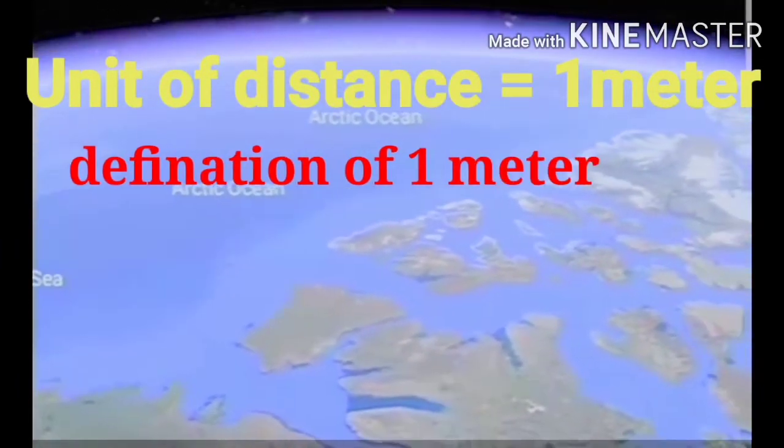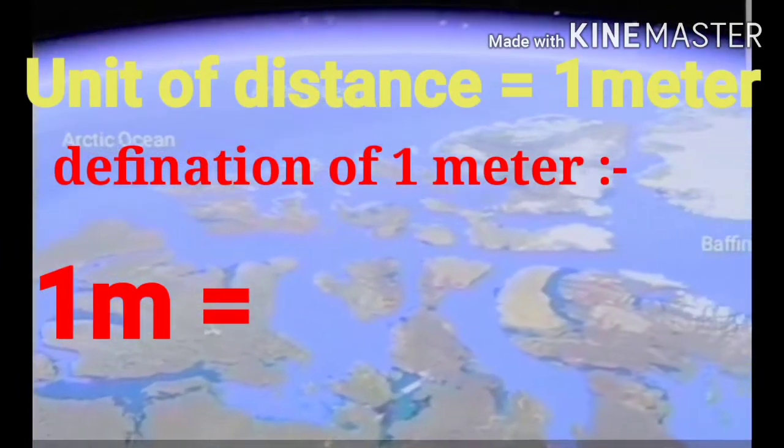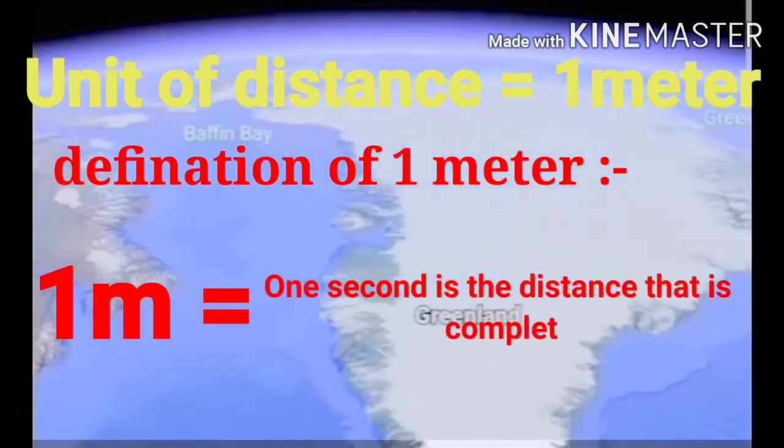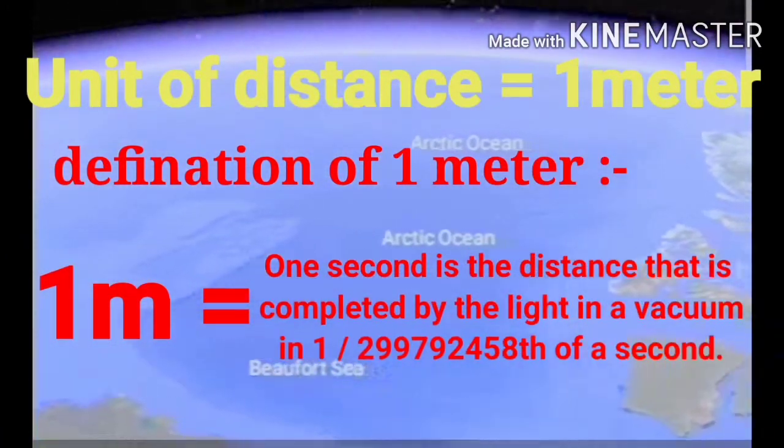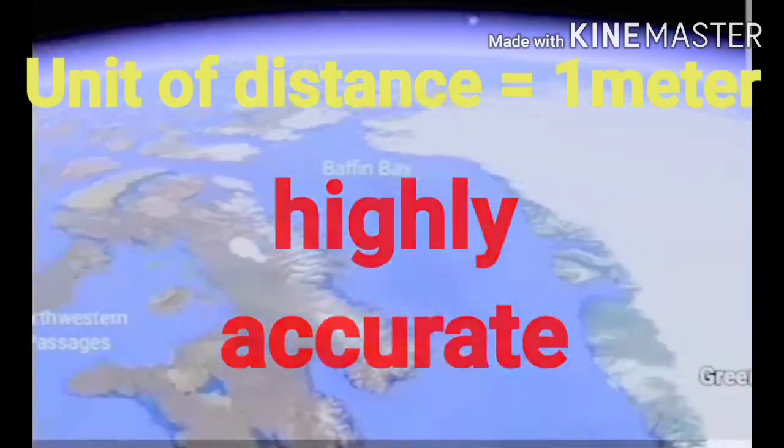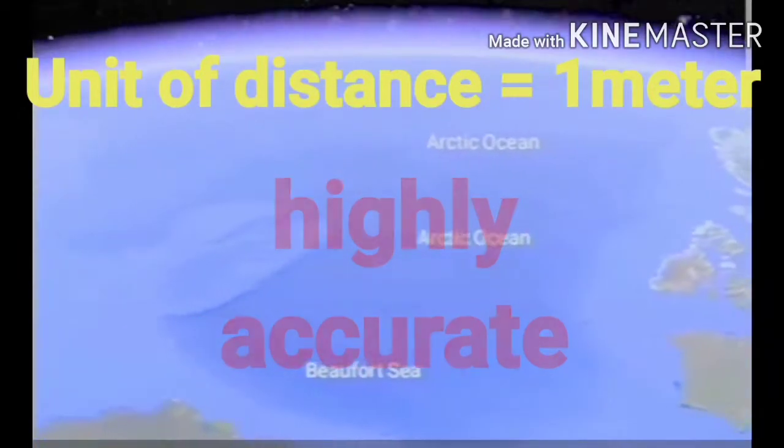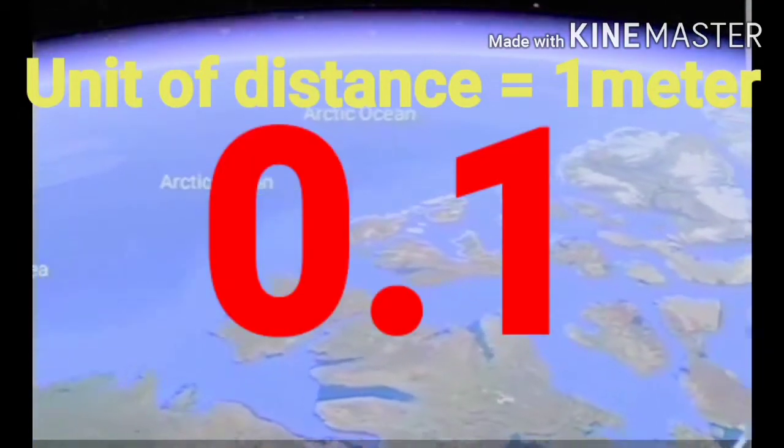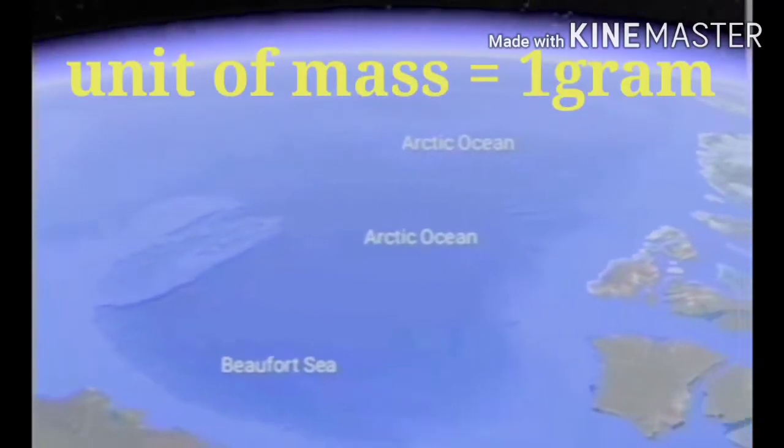That is, the distance that light completes in vacuum in 1/299,792,458 part of 1 second is 1 meter. And this unit of distance is highly accurate because it has an error of only 0.1 nanometer.